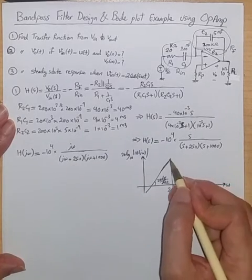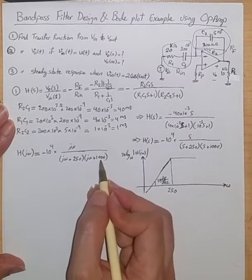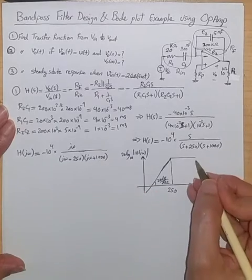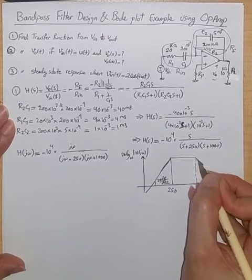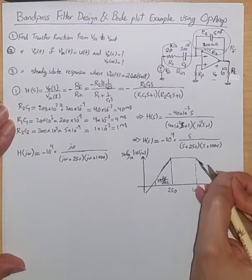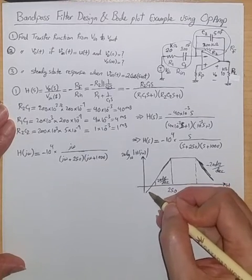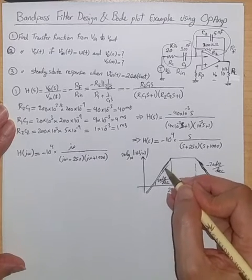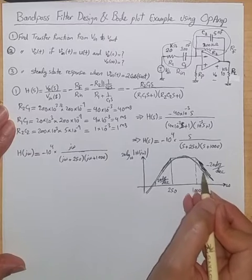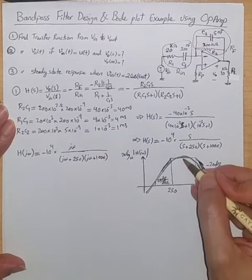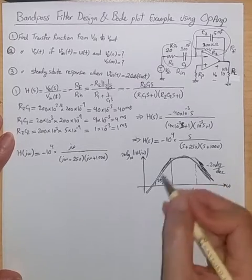This +20 dB/decade increase continues up to around ω = 250, where the first pole kicks in. As an approximation in the Bode plot, the +20 dB rise from the zero is cancelled by the first pole, resulting in a flat response. This flat region continues until ω ≈ 1000, where the second pole kicks in. With two poles versus one zero, the response then drops at −20 dB/decade, representing the bandpass behavior. In practice the response peaks at some frequency between 250 and 1000 rad/s.